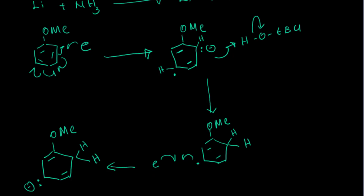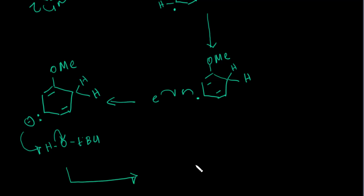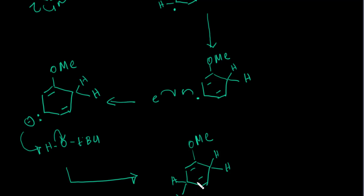This anion again reacts with the proton source, tert-butanol, grabbing a hydrogen. We already had one hydrogen added earlier, and now we add the new hydrogen here — and we end up with the final product. You can see we now have the cyclohexadiene — this is the final product of the Birch reduction.